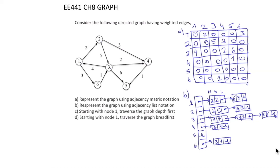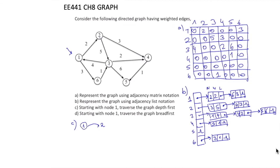This is the representation of the graph using adjacency list notation. Note that since this is a directed graph, the adjacency matrix is not symmetric, and all diagonal entries are 0 because there is no self-connection. For Part C, let's start from node 1 and traverse the graph using depth-first search. Starting with node 1, we mark it as visited, then go to node 2, then from node 2 to node 3, from node 3 to node 4, and from node 4 to node 5.